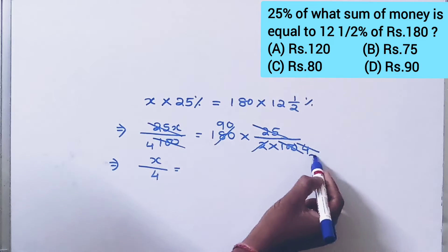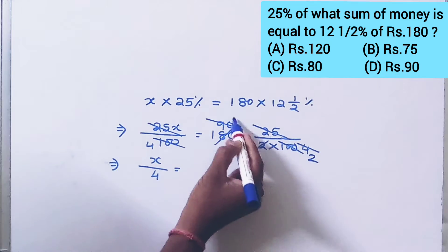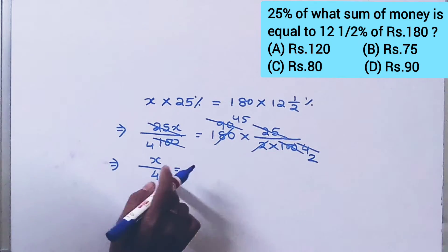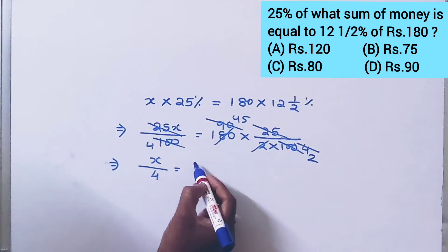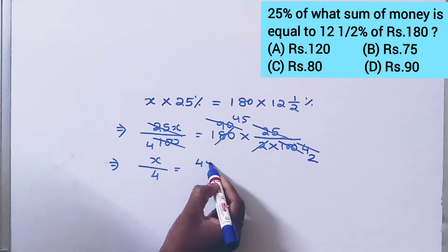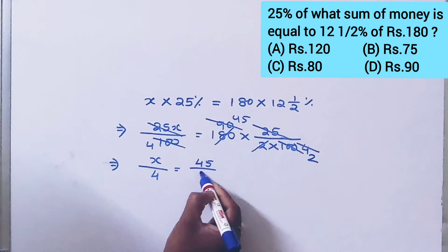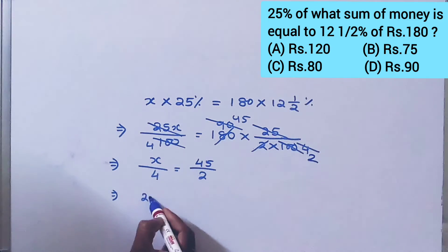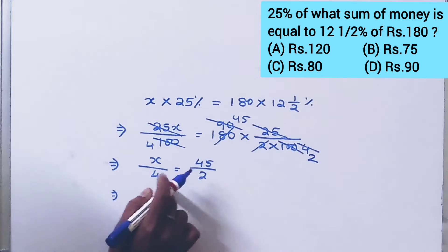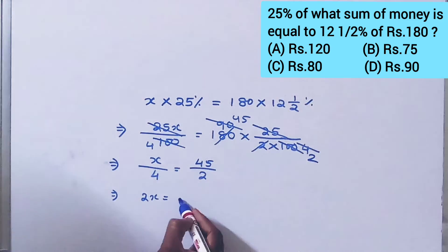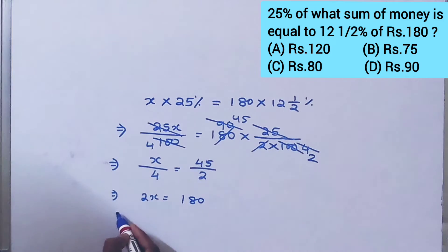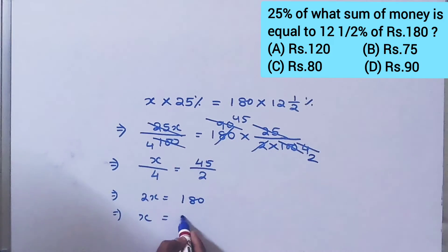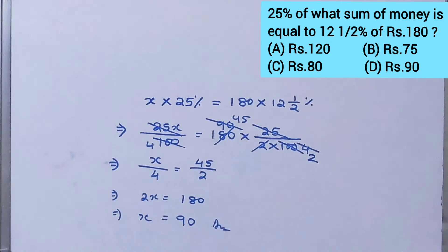That gives us 45. So X by 4 is equal to 45 by 2. That implies 2X is equal to 45 into 4, which is 180. Therefore X is equal to 90. So the answer is 90.